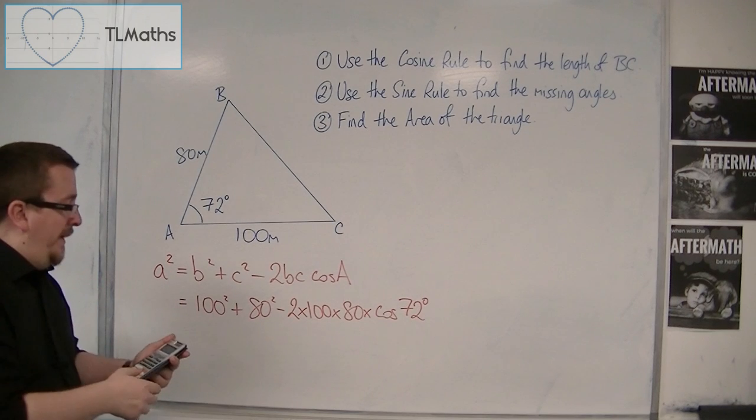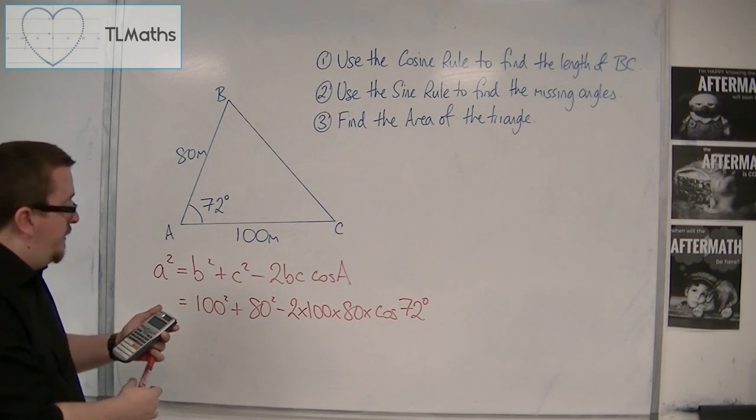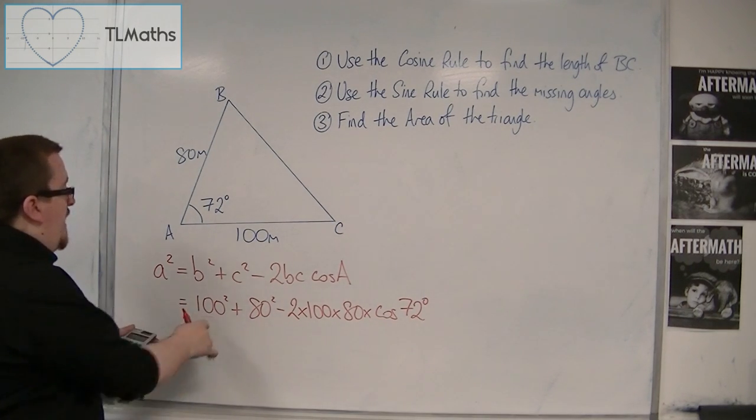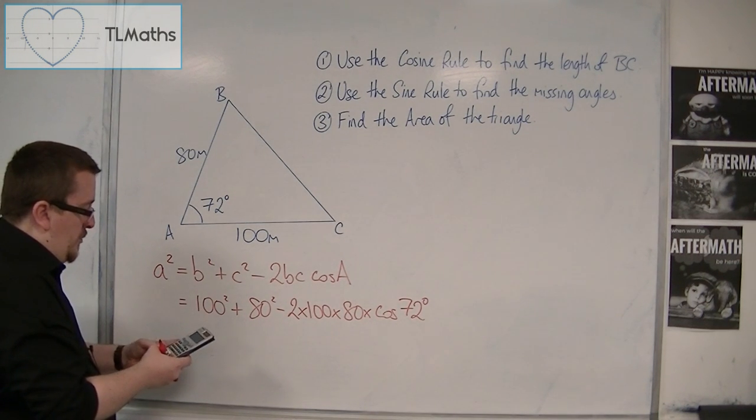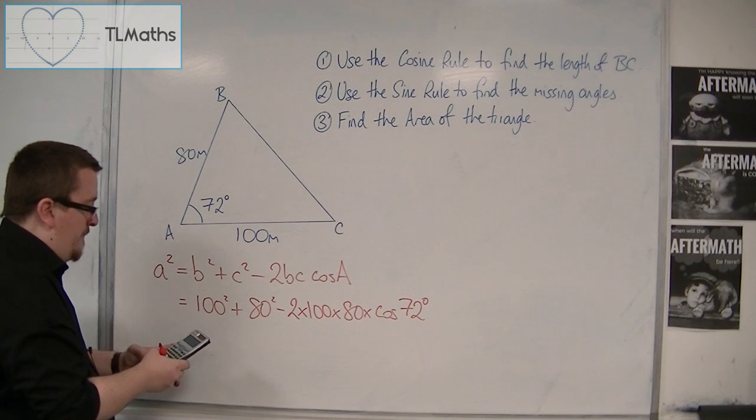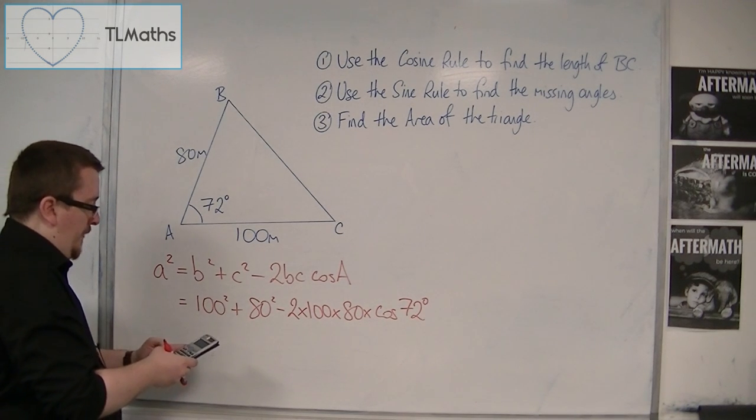Now, we want to be in degrees for this, so make sure your calculator is. And then we do 100 squared, plus 80 squared, minus 2 times 100 times 80, times cosine of 72.